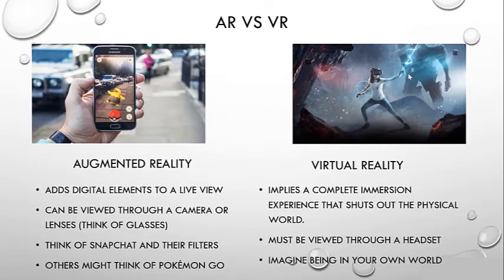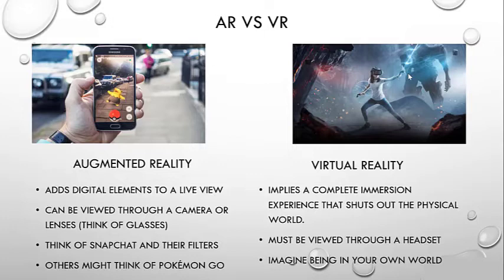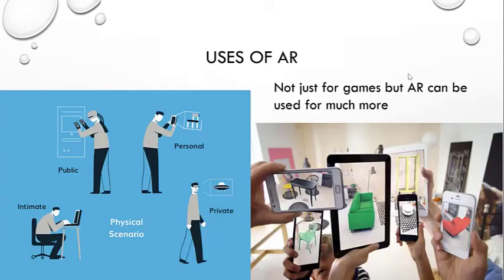Quickly going over the differences: augmented reality adds digital elements to a live view, like the Pokemon example, versus virtual reality where you are completely immersed and it shuts out all of the physical world — all you see and hear is what's in the headset. In AR it has to be viewed through something like glasses or a camera. Probably the most popular version of AR is Snapchat with their puppy ears and all the different filter options.